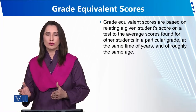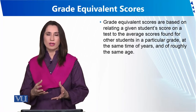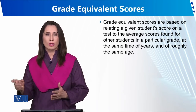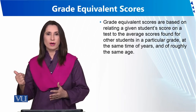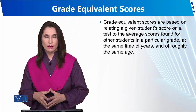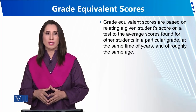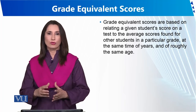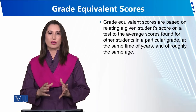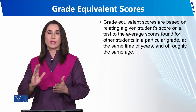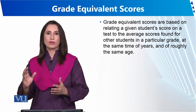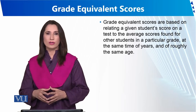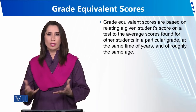अगर दोनों tests में score में difference आता है, जैसे एक में 7 है और दूसरे में 6, तो उनकी average निकाल लेते हैं। इस तरह average को point के साथ और months को point के बाद show करके grade equivalent score बताता है कि पूरे साल में किसी बच्चे की performance 3 months, 6 months, या year के बाद कैसी रही।